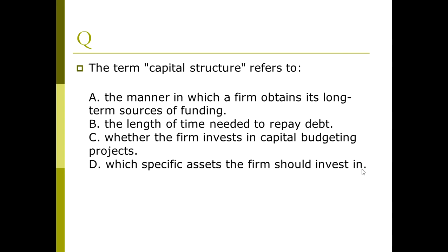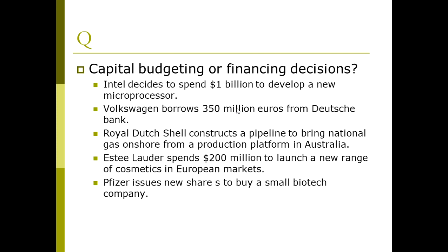Here is a small quiz: the term capital structure refers to which one of the following? The correct answer is: capital structure refers to the ways a firm obtains its long-term source of funding — either issuing long-term debt or issuing stocks and equities. Now we'll look at examples of whether decisions are capital budgeting or financing decisions.